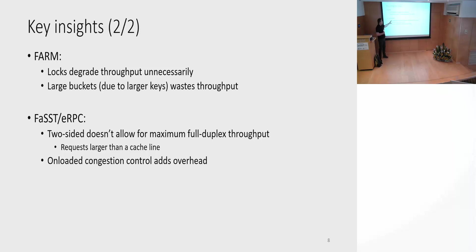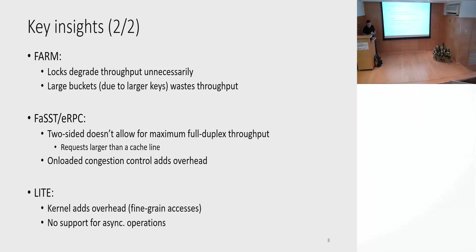Because eRPC uses unreliable datagrams, congestion control and retransmissions must be offloaded onto the CPU, which adds overhead. And LITE argues for doing protection in the OS kernel, which obviously adds overhead especially for fine-grained accesses. Also, in the first version of LITE, there was no support for asynchronous reads, writes, sends, and receives.